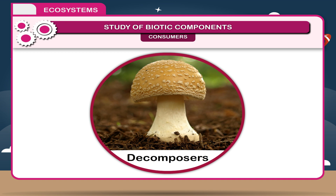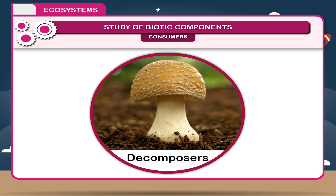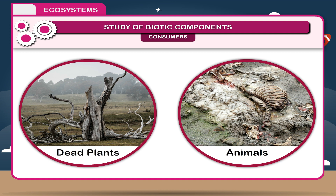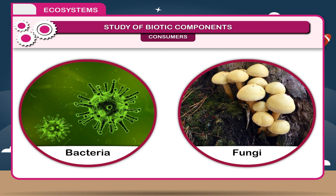Decomposers are living organisms that feed on dead organisms and decompose them into nutrients, carbon dioxide and water. This process is called decomposition. Dead plants and animals along with fecal matter are called detritus. Examples: bacteria, fungi.